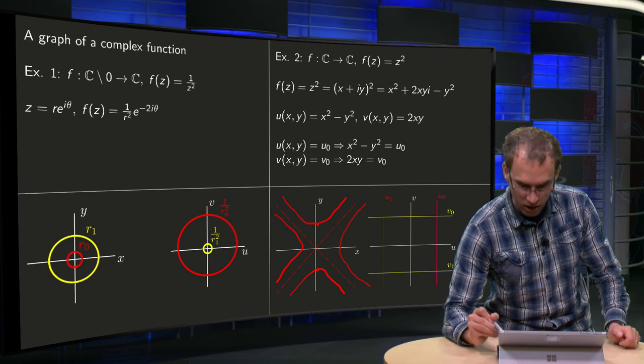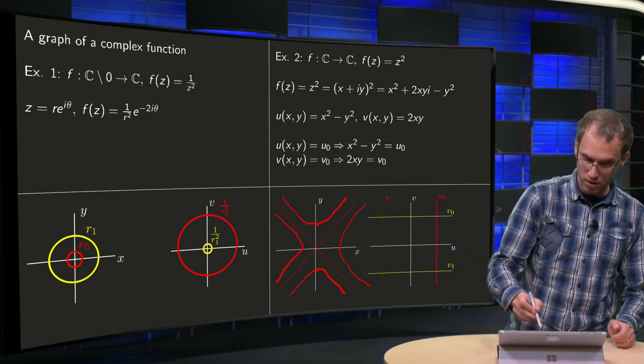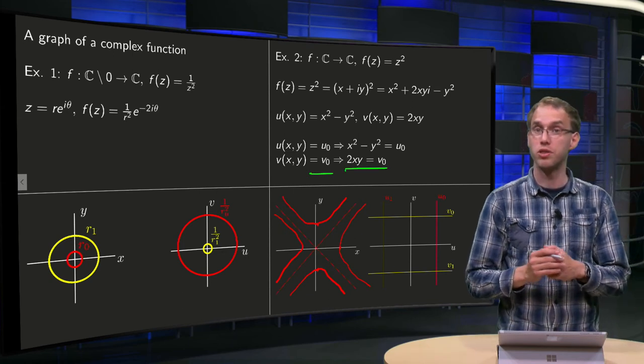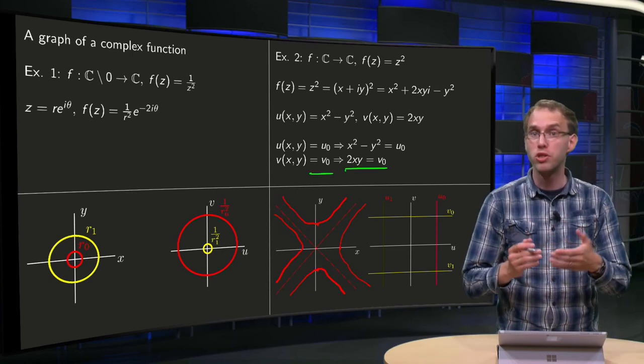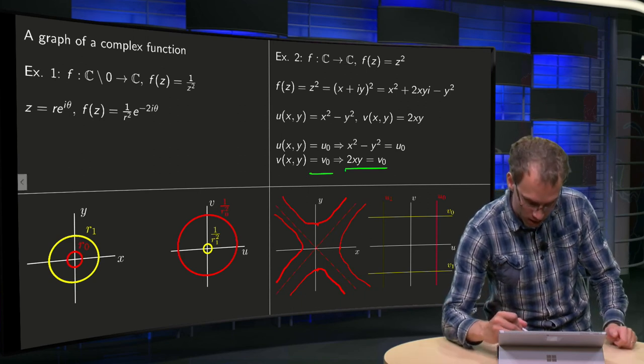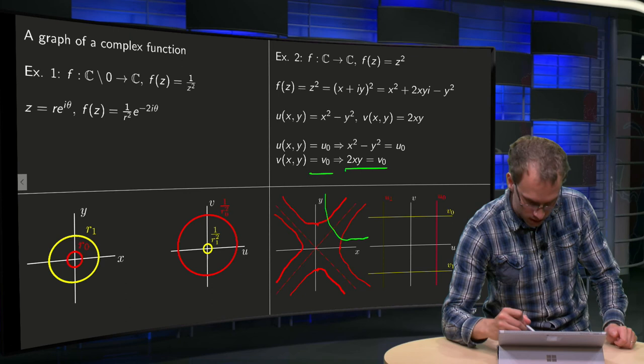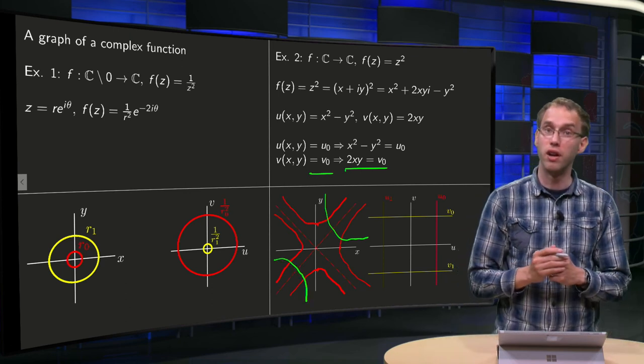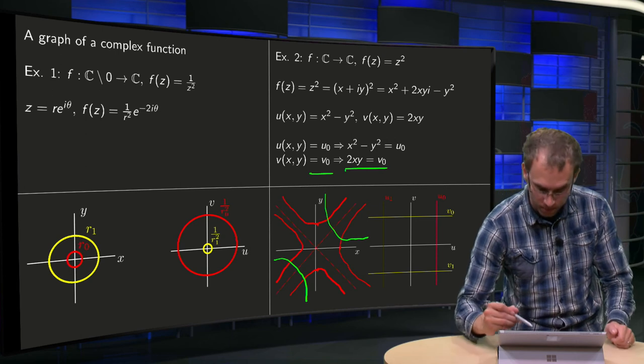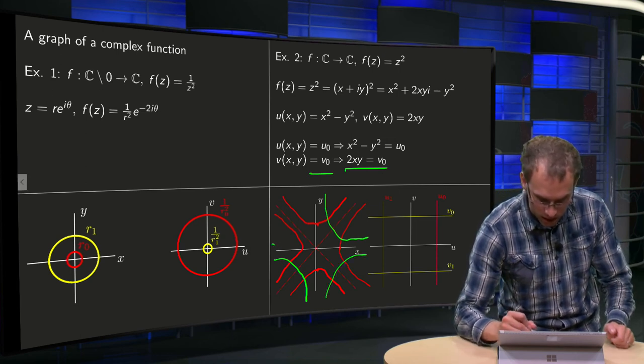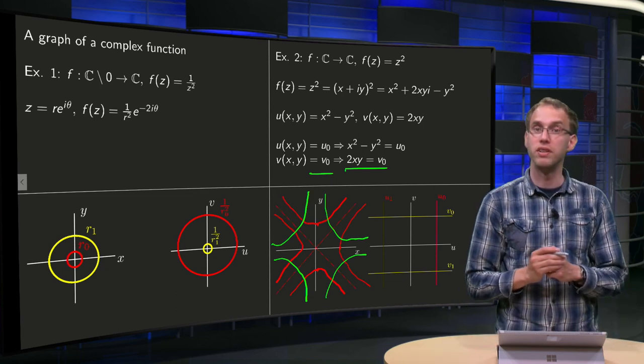And now we turn our attention to the other one. v = v0 constant, that means 2xy = constant, so y = constant/x, also hyperbolas, but now they look like this and that for v0 positive and like this and like that for v0 negative.